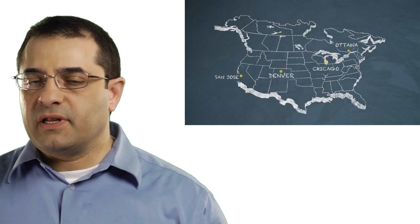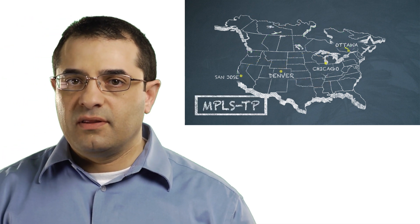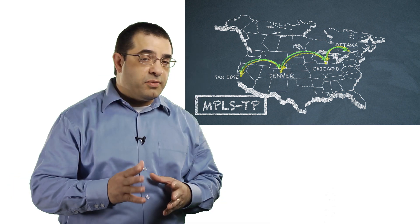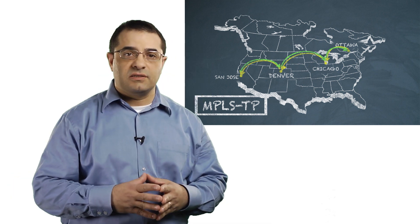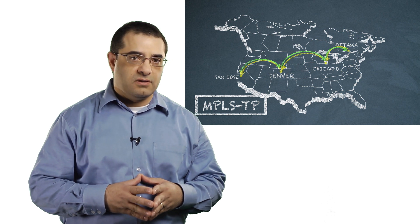In an MPLS-TP network, these paths are guaranteed to be congruent, meaning they will traverse every segment of the network both in their forward and reverse direction. In an MPLS network, this is not the case, and this is what's referred to as non-congruent paths.